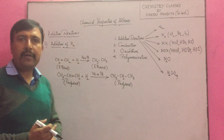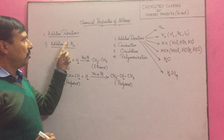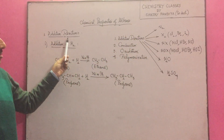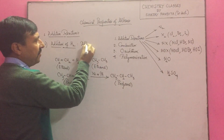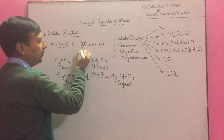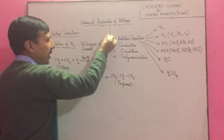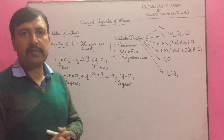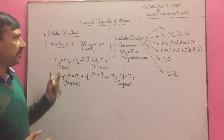We have already done this chemical reaction in the alkanes chapter. The first addition reaction is addition of hydrogen; we get alkanes, also called paraffins. This was the first addition reaction of alkenes.